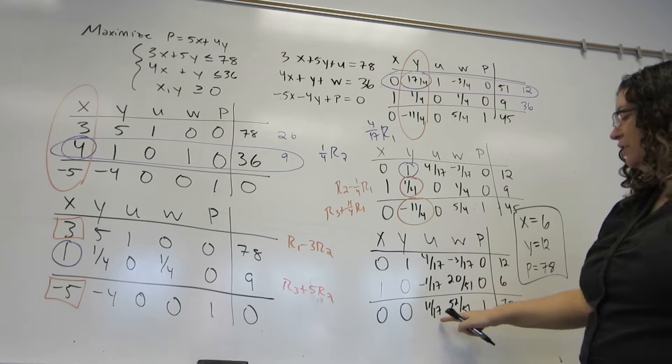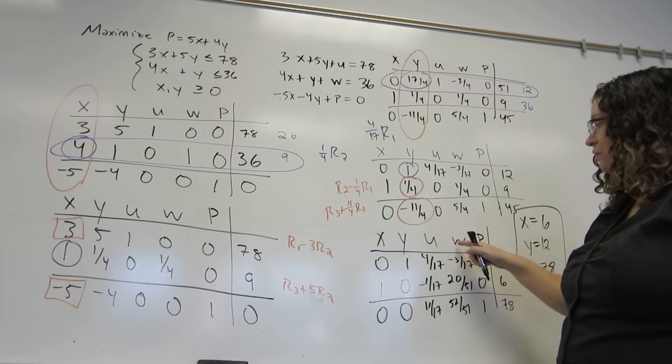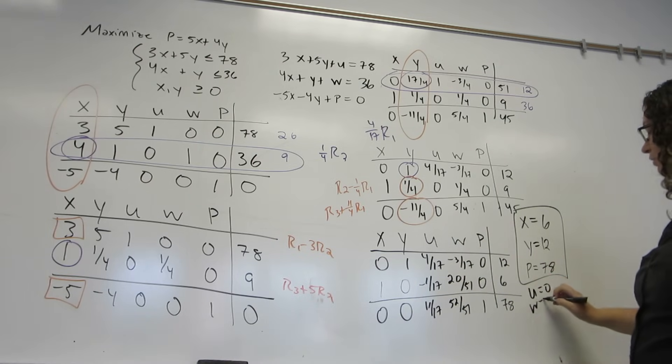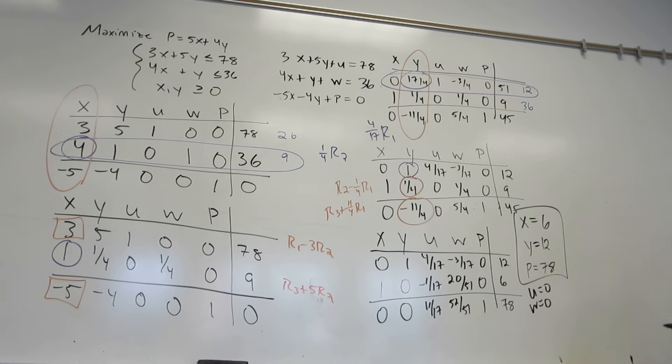The columns that do not have the single 1 followed by 0's mean those variables are just declared to be 0. So u equals 0, w equals 0 here. And we have our solution, the two variables and the value of the objective function for this linear programming problem.